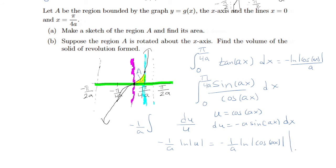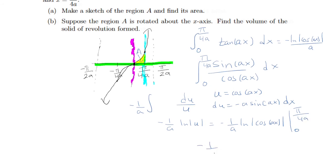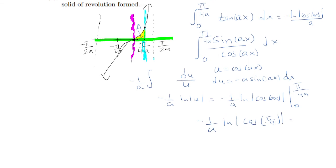Now we evaluate from 0 to π/4a. Plugging in π/4a — the a's cancel, leaving π/4 inside the cosine. Plugging in 0 gives cos(0) = 1, so ln(1) = 0 and that term cancels. cos(π/4) = √2/2, so this is the area of region A.